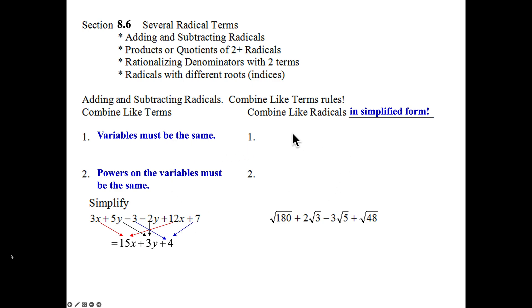So how do these rules compare to combined like radicals? My variables must be the same for combined like terms. My radicands, that's the value on the inside or the expression inside the radicals, must be the same. What are the powers on your variables? It's going to be the roots of the radicands must be the same.